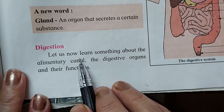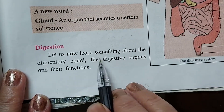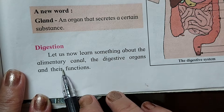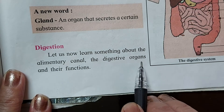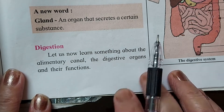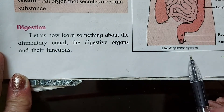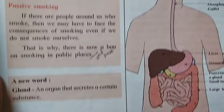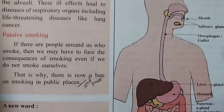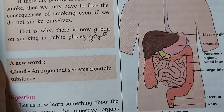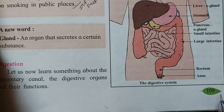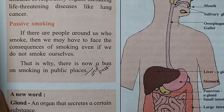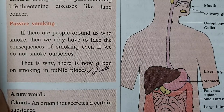Now let us learn something about the alimentary canal — the digestive organs and their functions. This is the digestive system. You can see the picture of the digestive system on page number 109. This is the diagram of the digestive system.